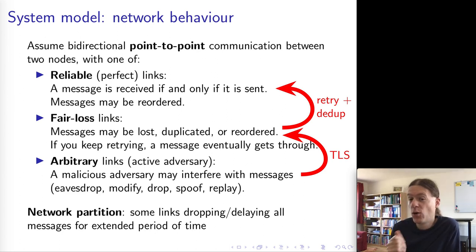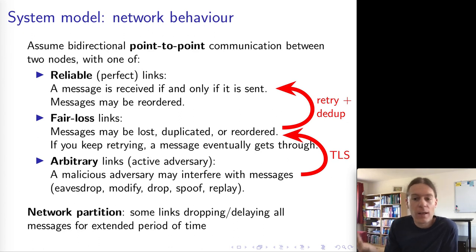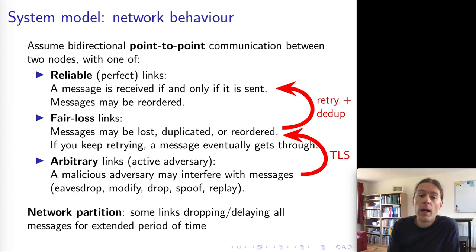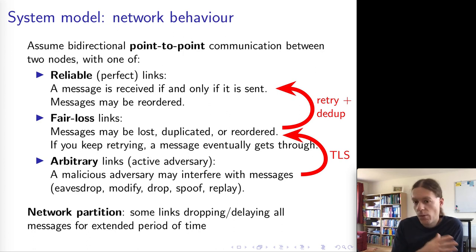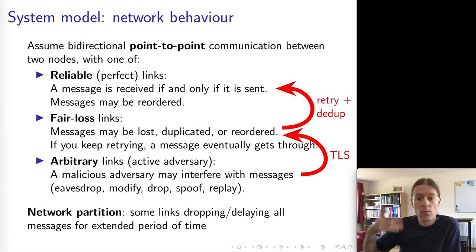The only thing we cannot do is if the active adversary decides to block all communication ever — nothing gets through and we can't guarantee eventual delivery. But if we're willing to assume the adversary will only interfere with a finite number of packets, then the arbitrary link can actually be upgraded to a fair loss link, and from there, through retrying and deduplication, we can turn it into a reliable link.